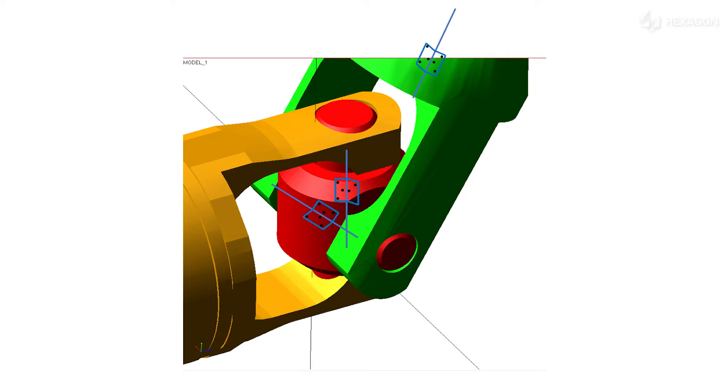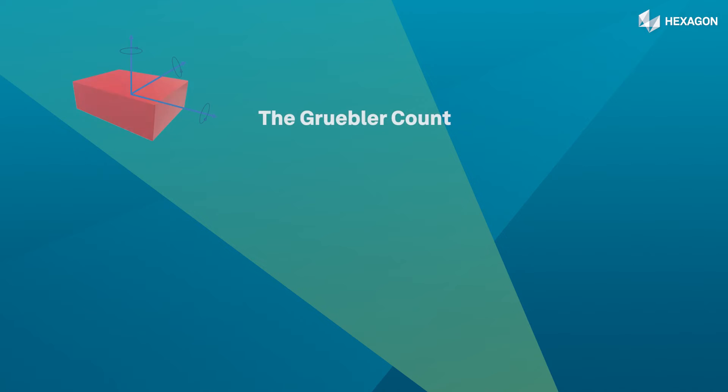Thus a simulation with this configuration will fail as shown in the message. If we do a model verification we get the message that the Gruebler count is minus three. Now the Gruebler count is a way to help identify redundant constraints.